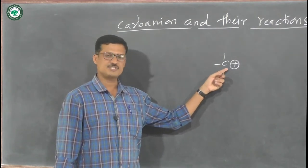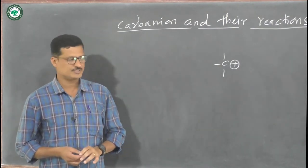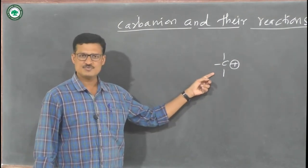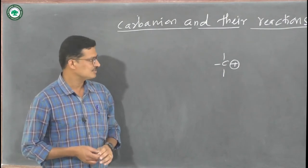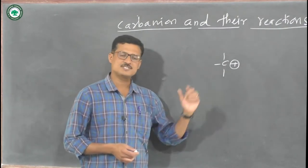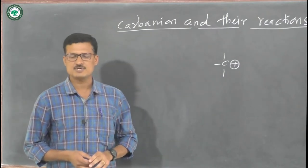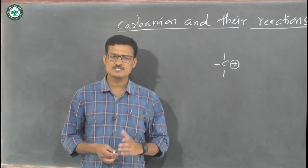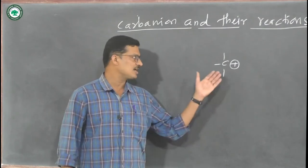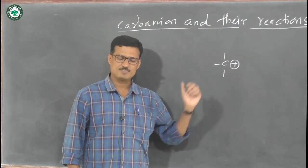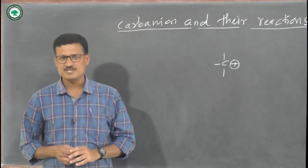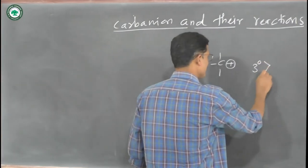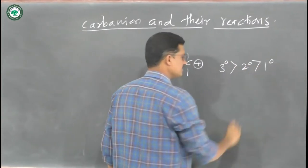Carbon having a positive charge means it requires electrons or a lone pair of electrons. We already discussed how carbocations are used in various reactions: the substitution reactions SN1 and SN2, and the elimination reactions E1 and E2, where carbocation formation takes place. We also discussed the stability of carbocations: tertiary carbocation is most stable, then secondary, then primary.